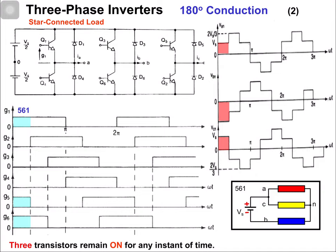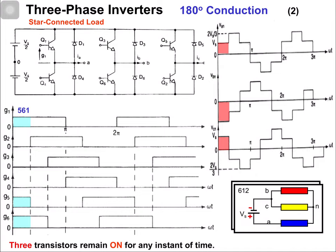In the second interval, switches 1, 2, and 6 are in the on state. The equivalent circuit is shown. Because of switch 1, phase A is connected with the positive terminal. Because of switch 2, phase C is connected with the negative terminal, and because of switch 6, phase B is connected with the negative terminal of the source.